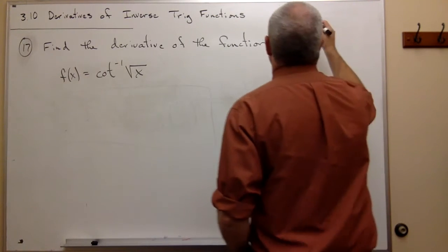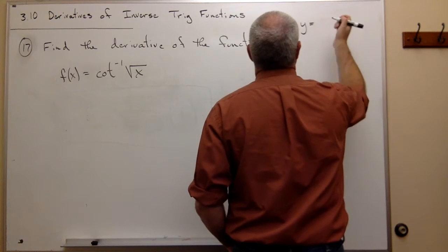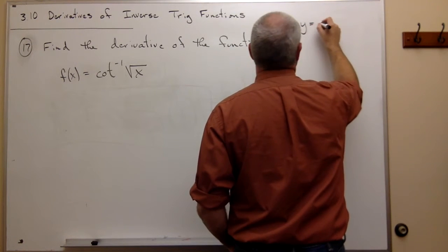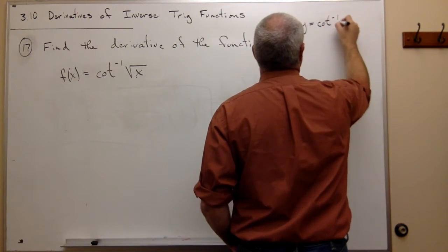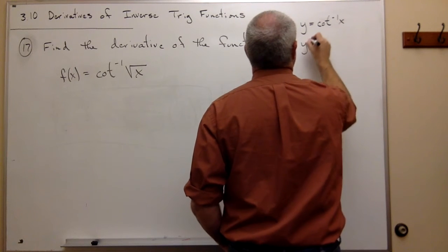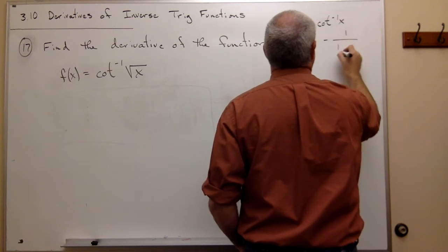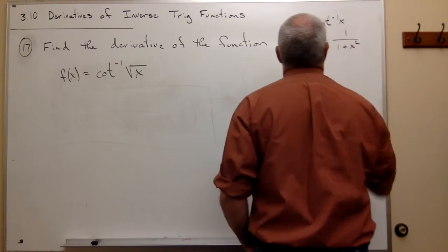So what we should know is that if y equals cotangent inverse of x, then y prime equals negative 1 over 1 plus x squared.